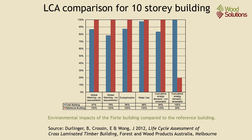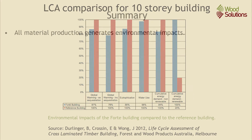When carbon sequestration in the timber is included, the Forte building's impacts for global warming potential are 22% lower than the reference building. Non-renewable cumulative energy demand is 16% lower. The demand for renewable energy is much higher as considerable renewable energy is embodied in the timber panels.